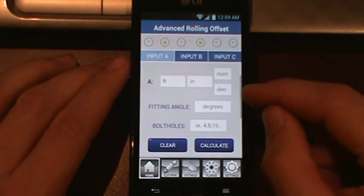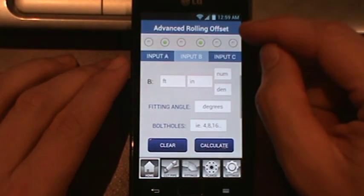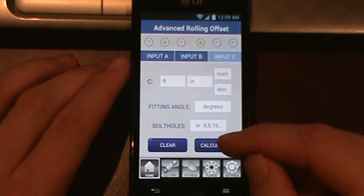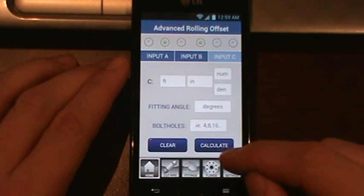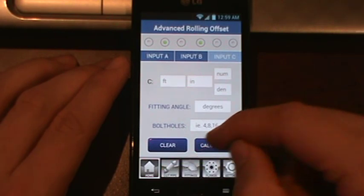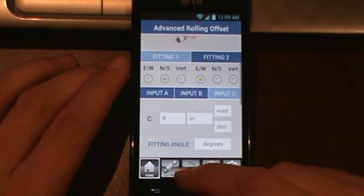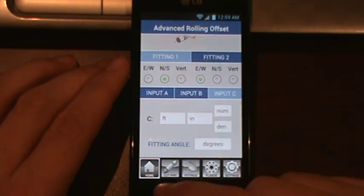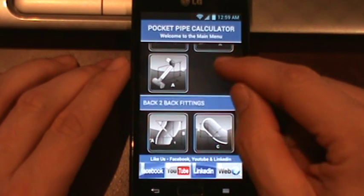You have the options here similar to the other screen where you have input A, B, and C. And then all the other things are the same. You have the ability for cut pipe. These buttons won't become available until you hit calculate. It kind of keeps the flow going so you actually operate the app correctly.